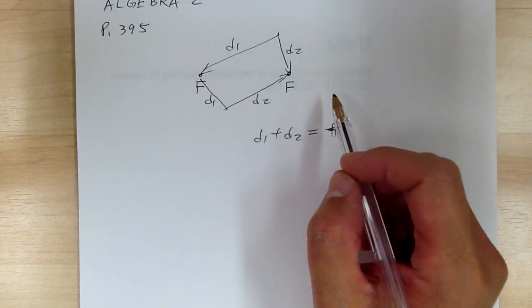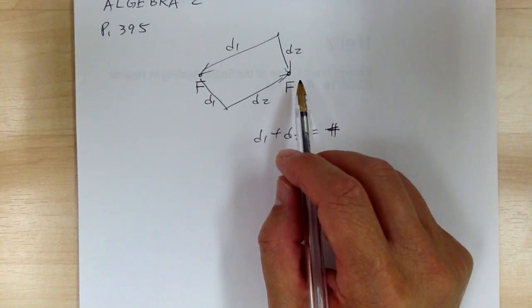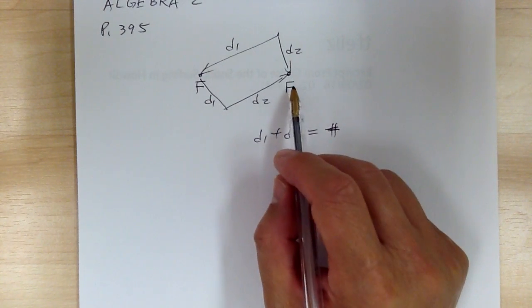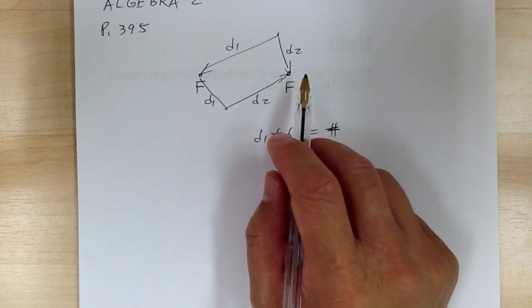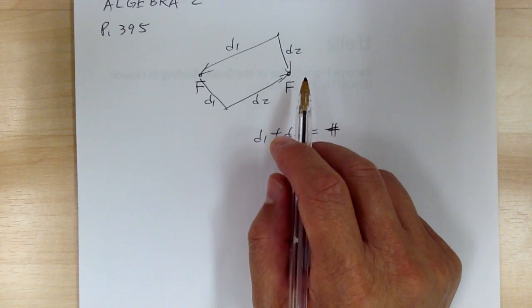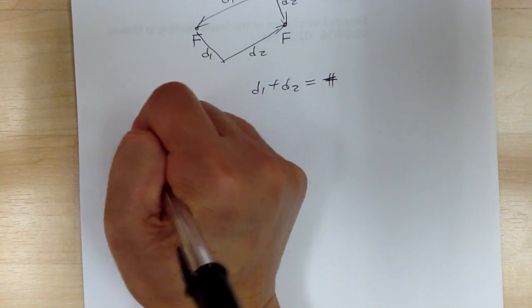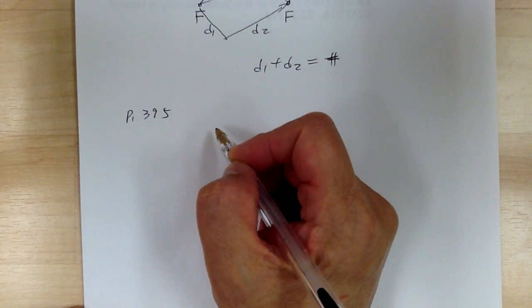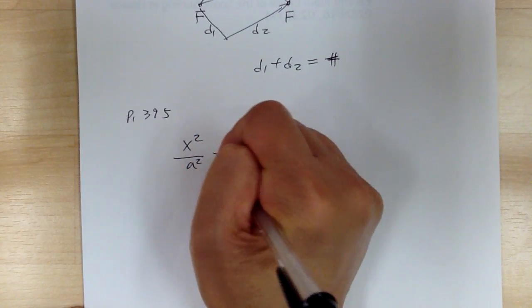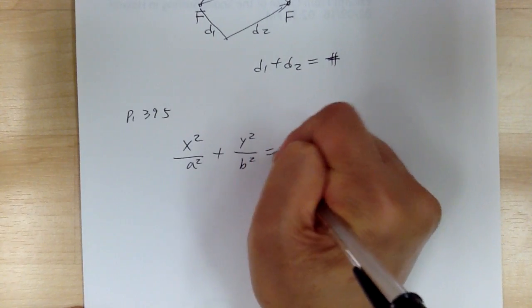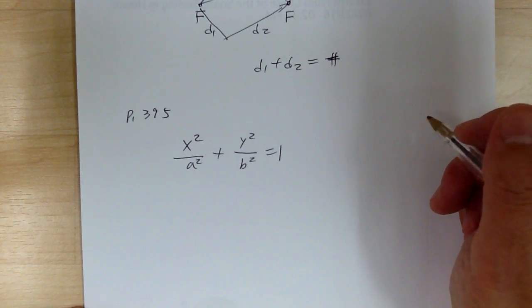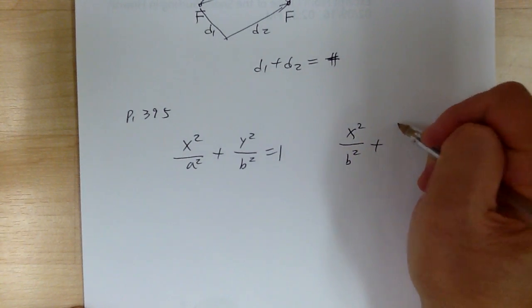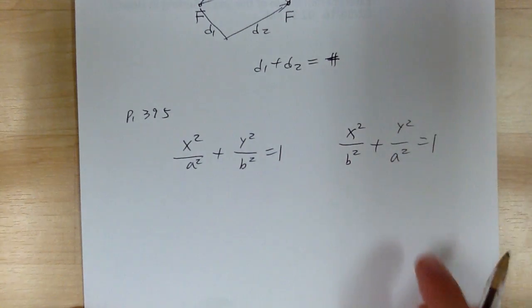For the ellipse, your key point is your center. For the parabola, your key point is the vertex, but for the ellipse it's your center. Look at page 395. Your standard form, because the center is at (0,0), is x squared over a squared plus y squared over b squared equals 1. You also have another form: x squared over b squared plus y squared over a squared equals 1. These are your standard forms.